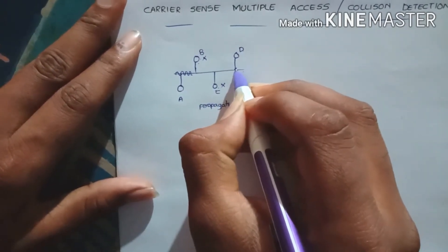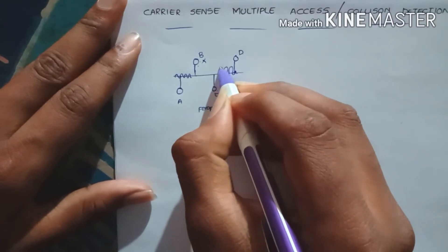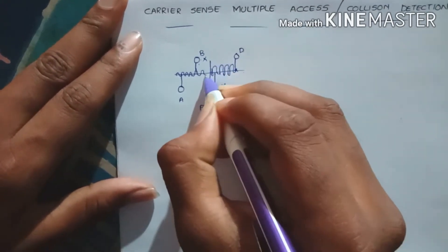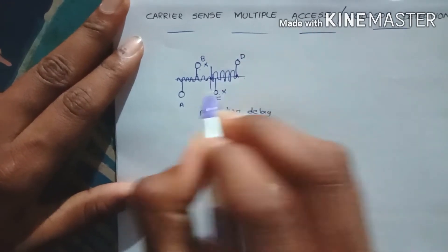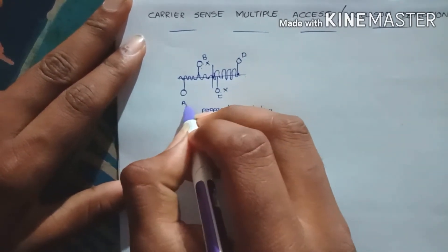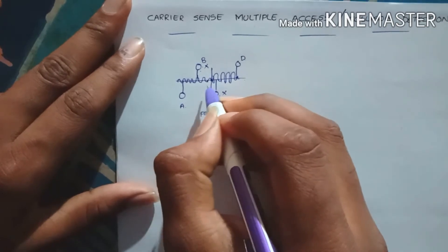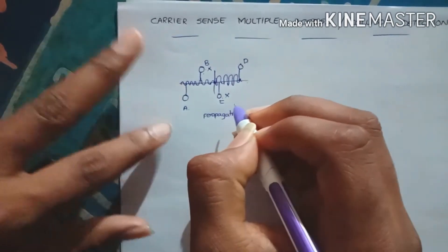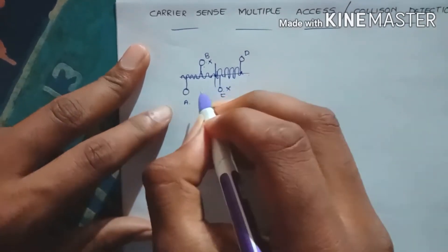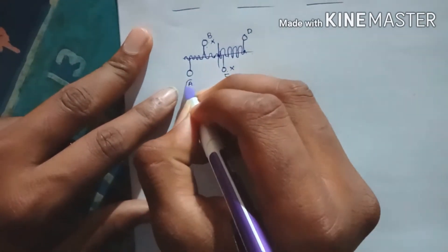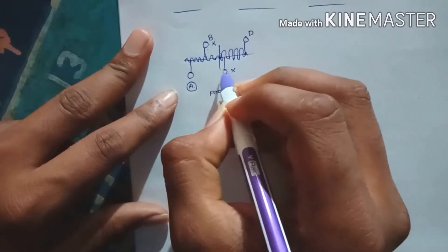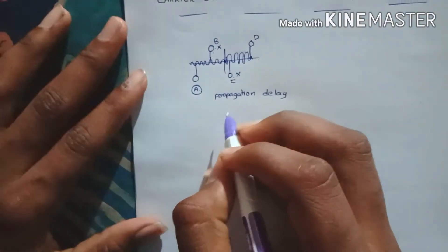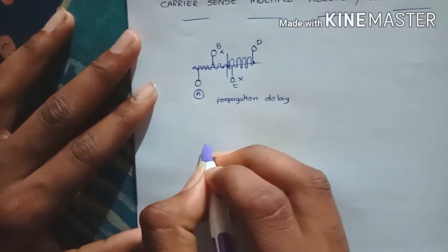The key concept is: while A is transmitting data, D is also transmitting some data. So the data from A and the data from D will collide at some point. But how does A know that its data has collided with another? That is our concept — Carrier Sense Multiple Access with Collision Detection.